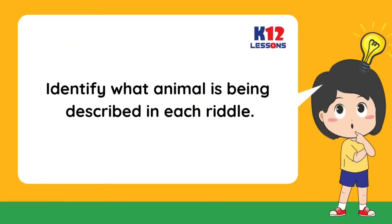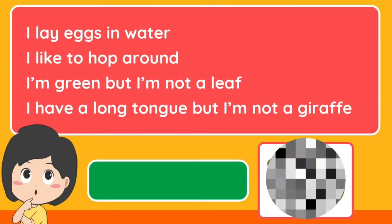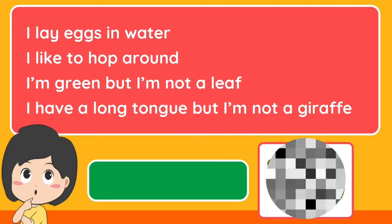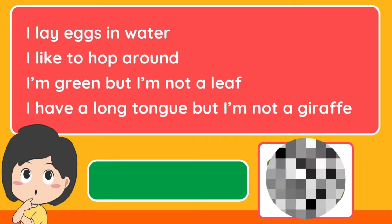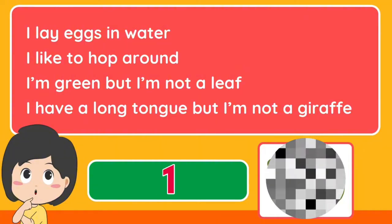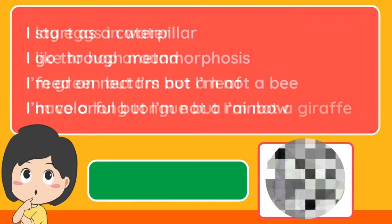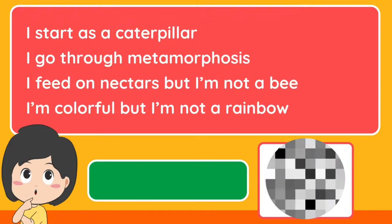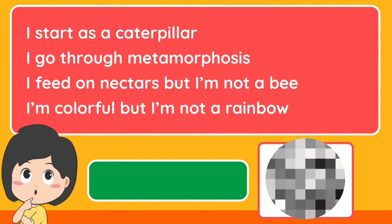Identify what animal is being described in each riddle. I lay eggs in water. I like to hop around. I have a long tongue but I'm not a giraffe. What am I? — I start as a caterpillar. I go through metamorphosis. I feed on nectars but I'm not a bee. I'm colorful but I'm not a rainbow. What am I?